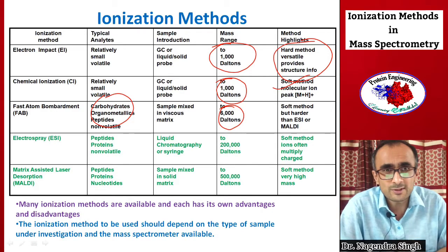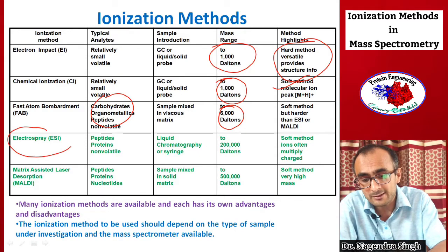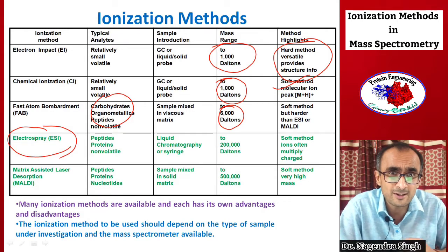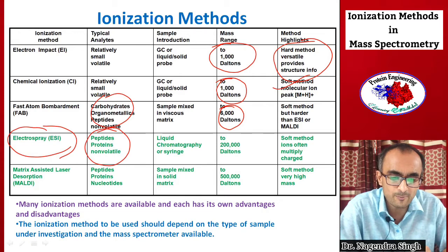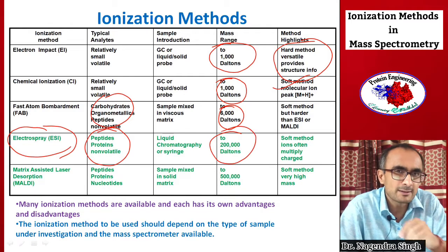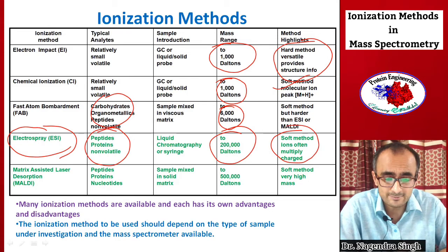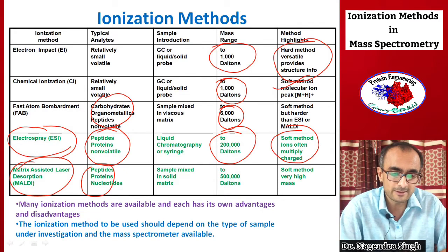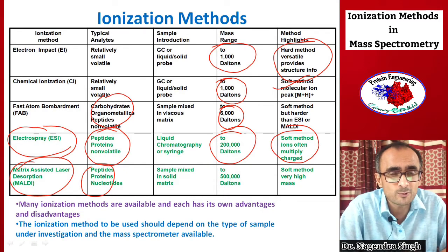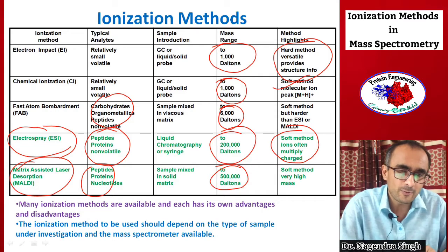To study proteins in proteomic analysis or other large molecules, electrospray ionization (ESI) is used. It is very soft — it doesn't break bonds, so fragment ions are minimized and only molecular ion peaks are observed. ESI is used for peptides, proteins, and non-volatile compounds up to 200 kilodalton mass, and it provides multiple charges to the analyte. MALDI is also a soft method used for biomolecules like peptides, proteins, and nucleotides, and can detect up to 500 kilodalton molecular weight compounds.